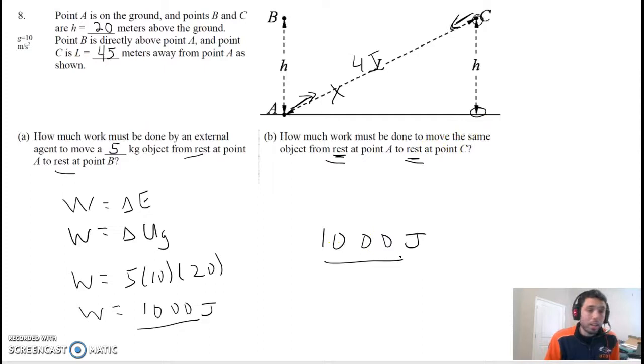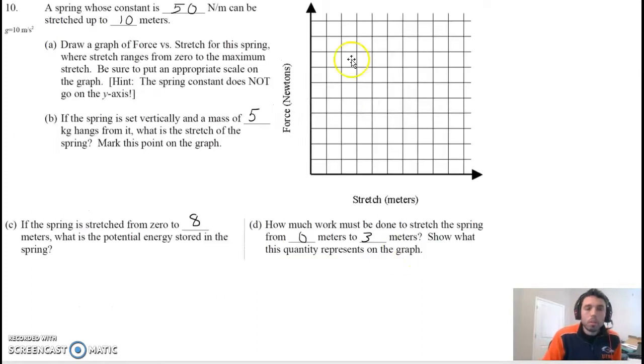Let's go to number 10. We've got a spring with a constant of 50 newton per meter, it can be stretched up to 10 meters. First part is draw a graph of force versus stretch for this spring. We're going to use Hooke's Law here, F equals negative KX. If K is 50 and X, we're going to plot X, so we're just going to do 1 meter, 2 meters. Its maximum is 10 meters. Luckily for us, this graph is exactly 10 notches long here: 1, 2, 3, 4, 5, 6, 7, 8, 9, 10.